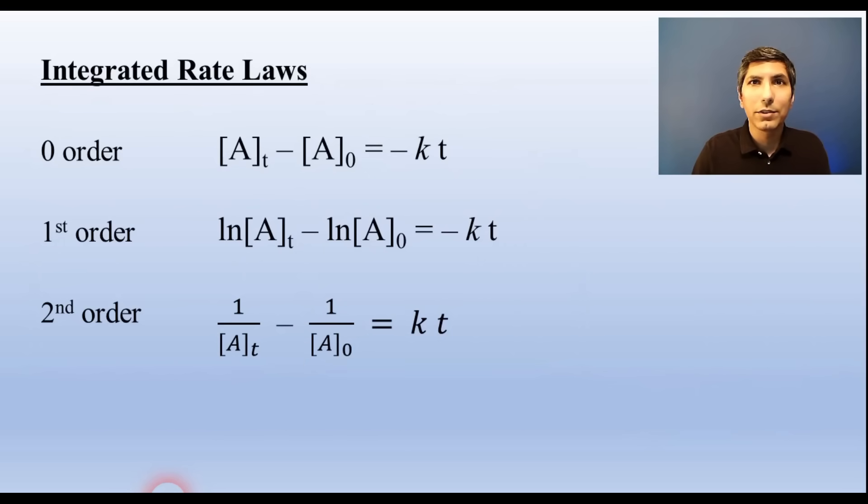We use integrated rate laws to relate the rate constant, the initial concentration of a reactant, the time elapsed, and the concentration left after that amount of time. These are the integrated rate laws for zero, first, and second order processes. If you know any of the three values, you can solve for the fourth. We can derive the half-life equation for any of these, but in AP Chem, you'll only be asked about half-life for first order processes. For first order processes, half-life equals 0.693 divided by the rate constant.